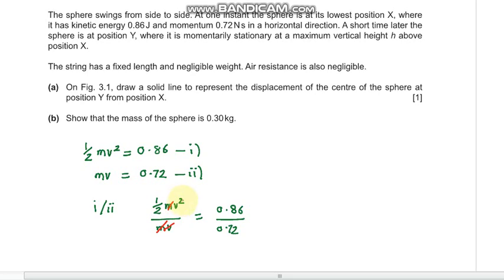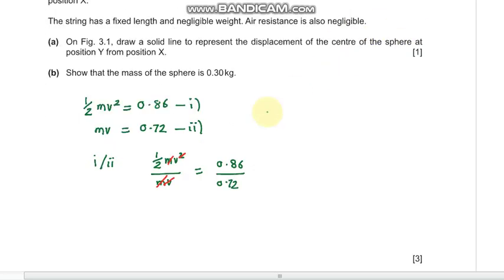So we are left with the velocity. The velocity becomes v equals 2 times 0.86 divided by 0.72, which is 2.388.